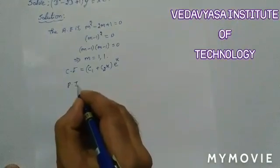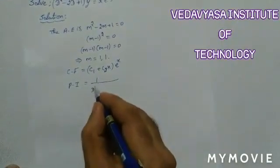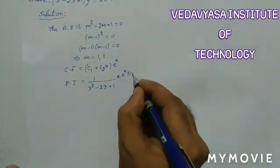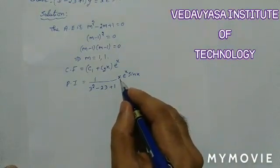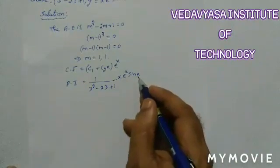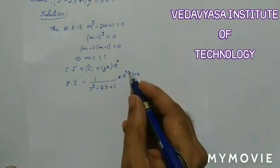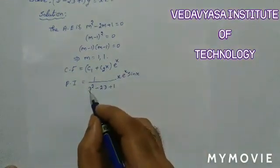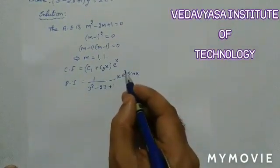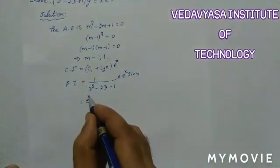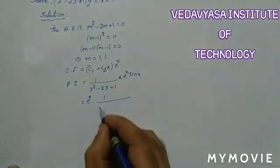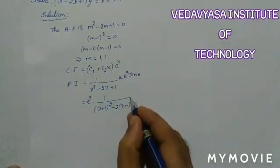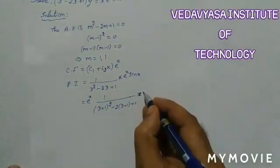The particular integral PI = 1/(D² - 2D + 1) · x·eˣ·sin x. Here we have three functions: x, eˣ, and sin x. Since one of the functions is eˣ, we take eˣ outside and replace D with (D + 1), because the coefficient of x in the exponent is 1. This gives eˣ · 1/((D+1)² - 2(D+1) + 1) · x·sin x.